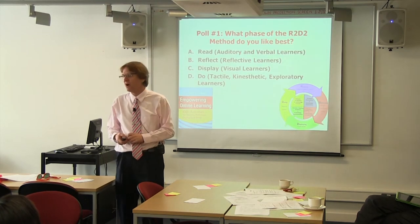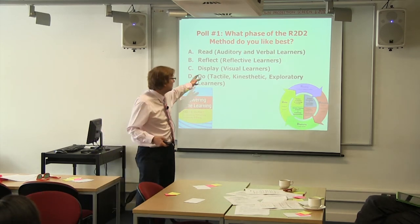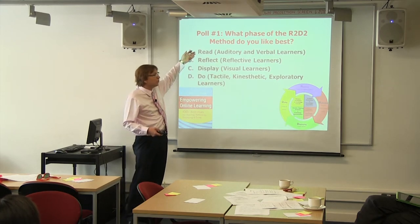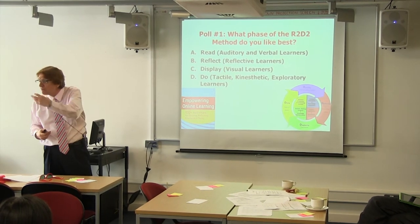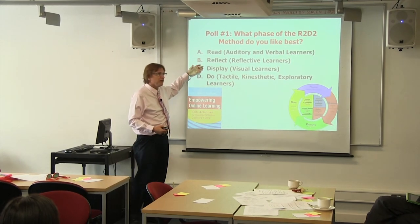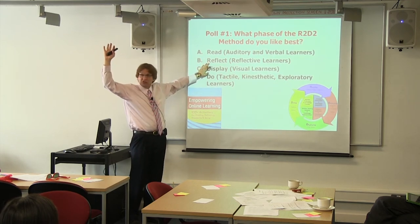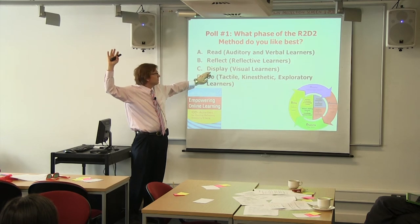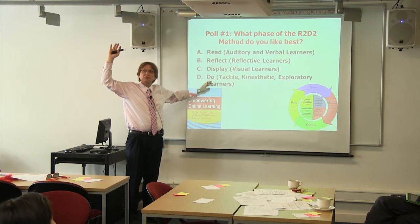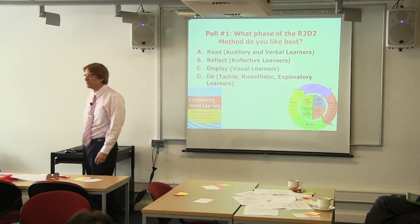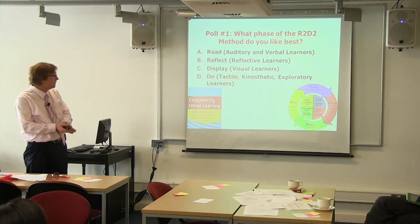So that's the R2D2 model — read, reflect, display, and do. Some prefer tactile hands-on learning, some are visual, some reflective, some want to read. If you had to pick your top preference — reading, reflecting, displaying, or doing — we have 25 activities embedded for each part, 100 total. How many of you think this model's useful? Who got at least one idea this morning from the sessions? Two or more? Three or more? At least four ideas?